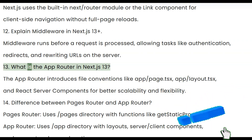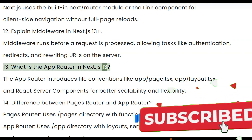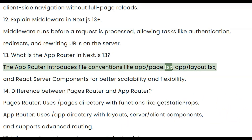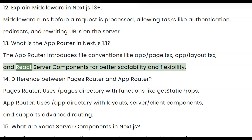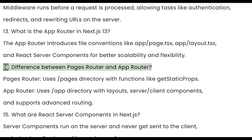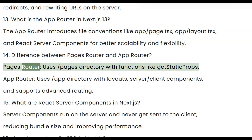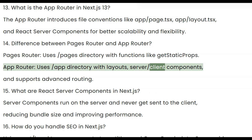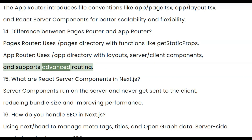Thirteen, what is the app router in Next.js 13? The app router introduces file conventions like app/page.tsx, app/layout.tsx, and React server components for better scalability and flexibility. Fourteen, what is the difference between the pages router and app router? The pages router uses the pages directory with functions like getStaticProps. The app router uses the app directory with layouts, server and client components, and supports advanced routing.